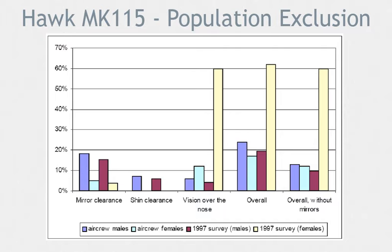As you can see, the mirror clearance accounts for rejection of approximately 20% of the aircrew males and 5% of females. The results are similar for the Canadian Forces male population at large, as the males were measured in the 1997 survey. Shin clearance with the main instrument panel affects 6 to 8% of males. And vision over the nose is the number one cause of rejection for females, with an exclusion rate of about 12% for females within the aircrew selection limits and about 60% for the Canadian Armed Forces females in general.